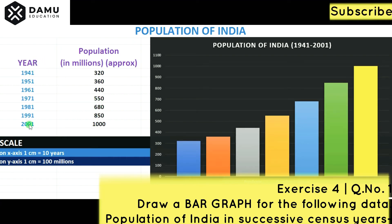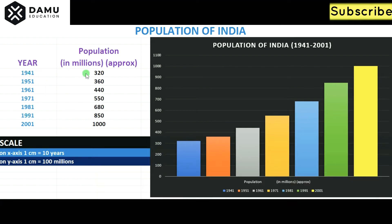The data for successive years is as follows: in the year 1941 — 320 millions; 1951 — 360; 1961 — 440; 1971 — 550; 1981 — 680; 1991 — 850 millions; and 2001 — 1000 millions.